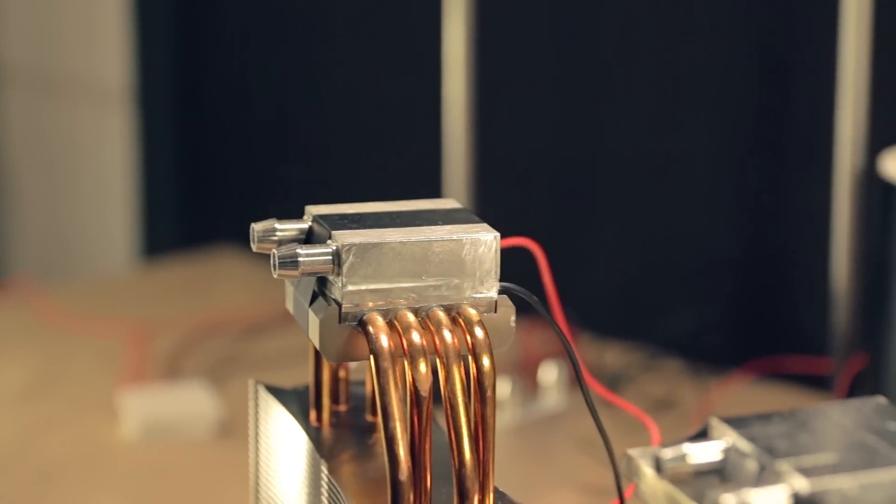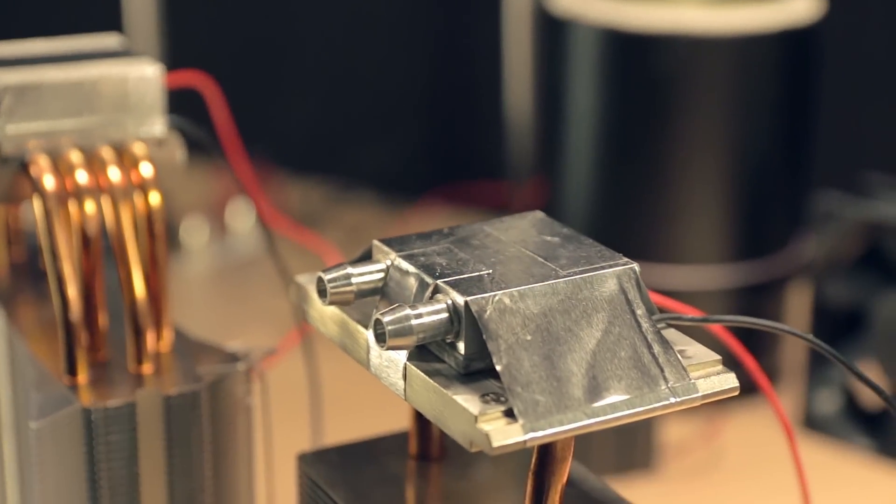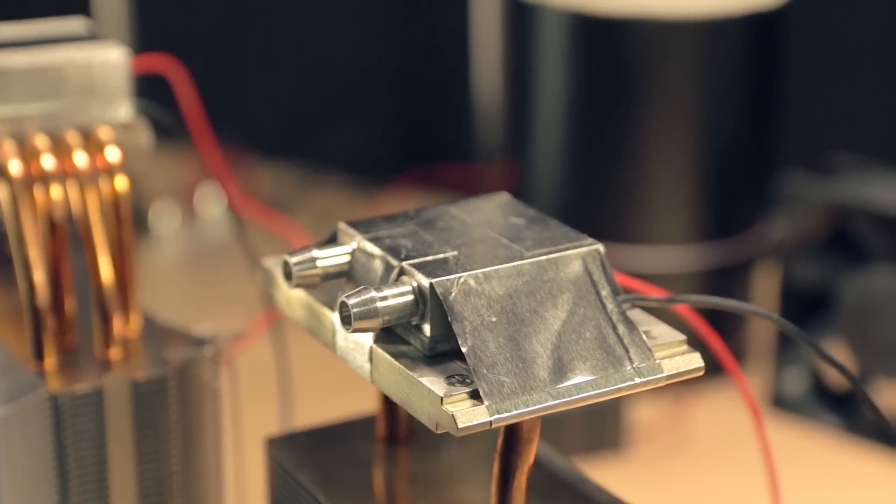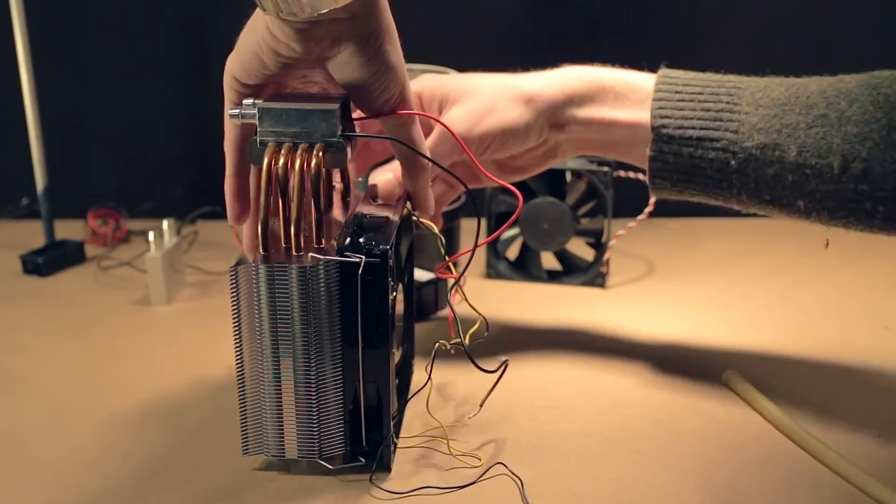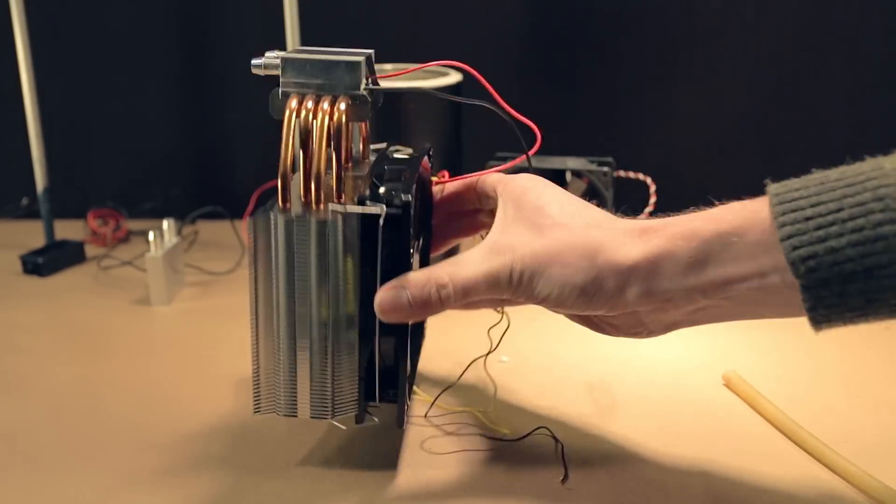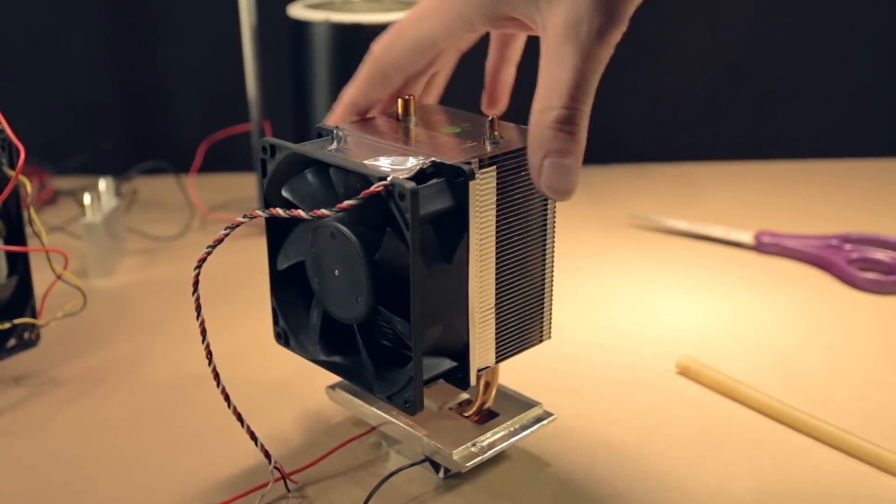After I had everything in place on that heatsink, I went ahead and repeated the process with another chip and a different heatsink. Next came the step of putting on the fans for the heatsinks, this one held in with clips, and this one I just used more of that metal tape.